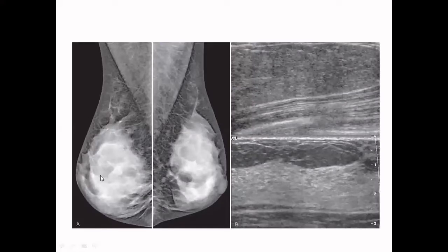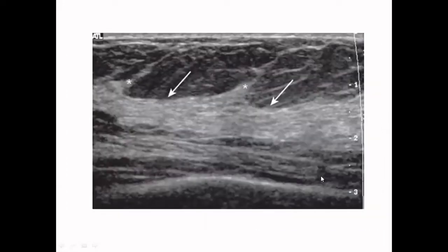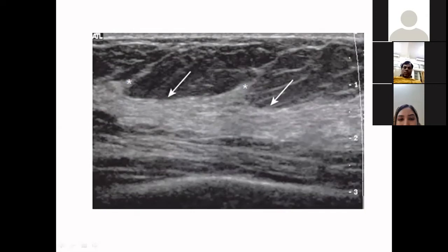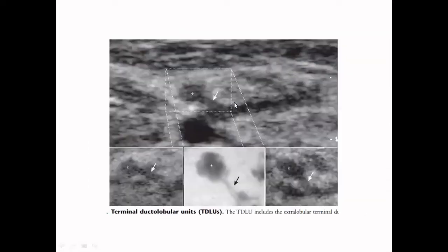Dense breasts on mammography can be due to either dense glandular elements — hypoechoic on ultrasound — or dense fibrous stroma — hyperechoic on ultrasound. So doing sonomammography on a dense breast found on mammography is very important. As age progresses, there will be more fatty proliferation instead of glandular and fibrous stroma. We see prominent echogenic strands passing from anterior to posterior — these are Cooper's ligaments, which support the breast parenchyma.